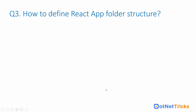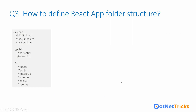The next question is: how should you define the React application folder structure? By default, when you create a React.js application using the React CLI, you will have a folder structure with: a node_modules folder, a README file, a package.json file, a public folder containing index.html and favicon.ico, and in the src folder: app.css, app.js, app.test, index.css, index.js, and logo.svg.